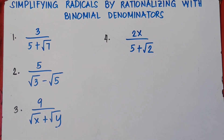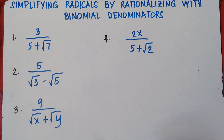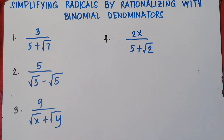Once again class, if you talk about rationalizing, you're referring to removing the radical on the denominator. You need to eliminate the radical symbol or the radical on the denominator, because you're not allowed to have your final answer contain a radical on the denominator.